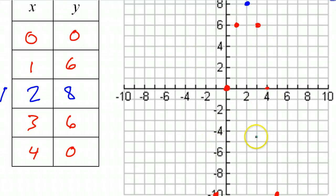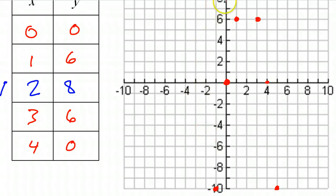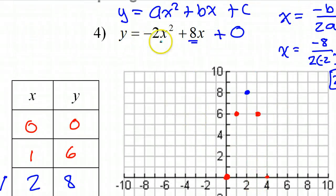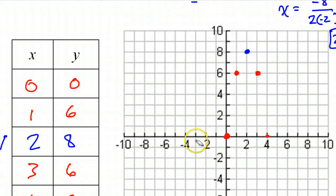Let's go ahead and graph this parabola. By the way, we should have known that this parabola was going to be upside down — facing down — just by looking at the equation. What part of the equation tells us that? That's right, the negative in the front. The a value is negative, and anytime that happens it's going to be a downward-facing parabola.